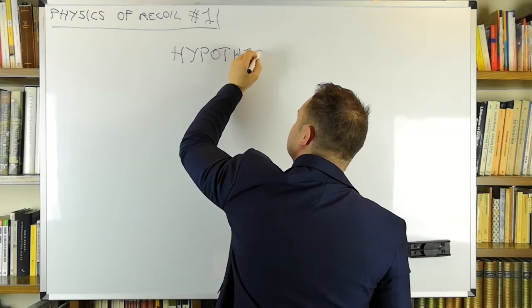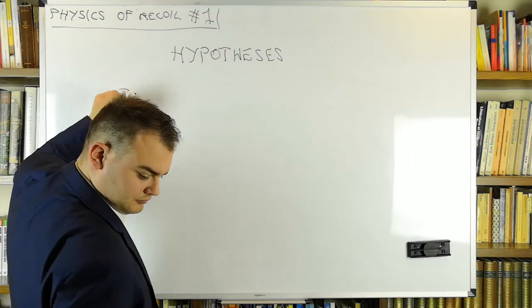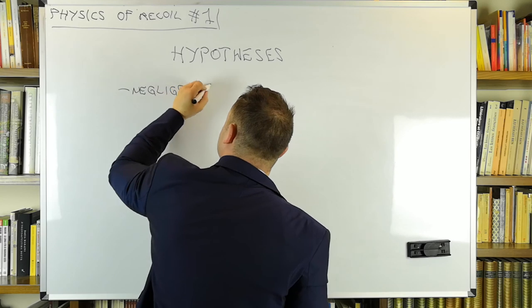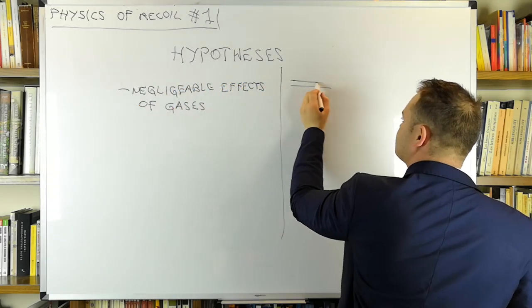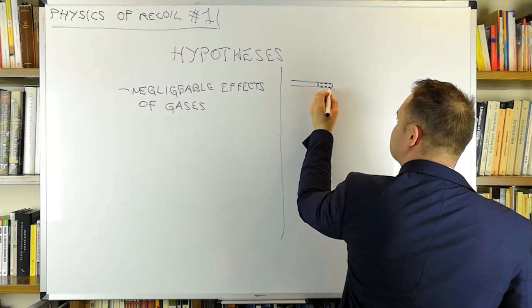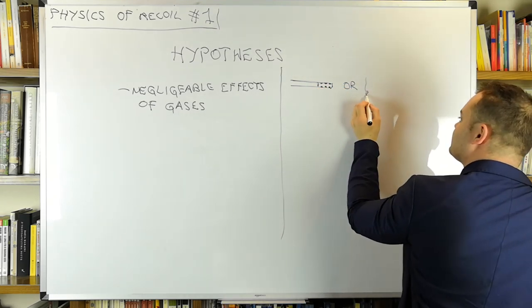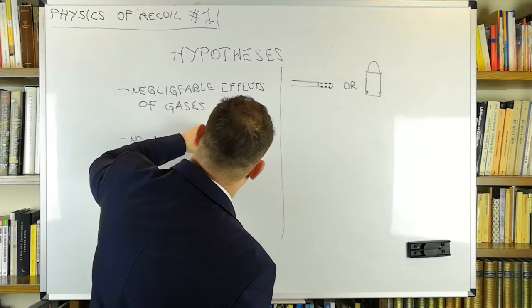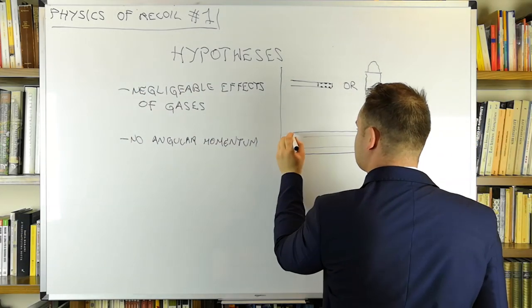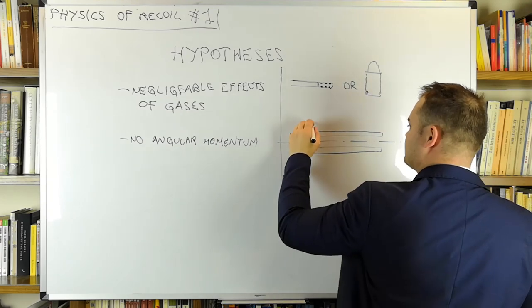For now, let's consider guns that respect the following three hypotheses. The effects due to the mass of the gases are negligible. This is accurate if a muzzle brake is used, or if the powder mass is little compared to the bullet's mass, like in handguns and shotguns. No angular momentum involved. This is accurate if the center of mass of the gun is sufficiently close to the bore axis.